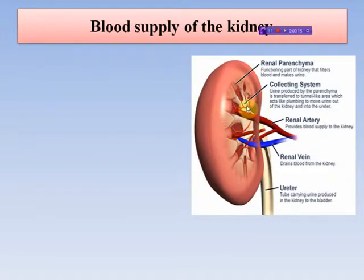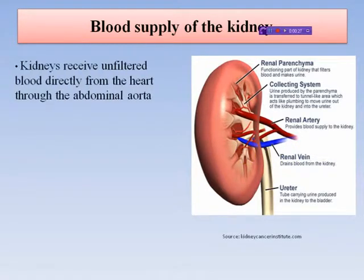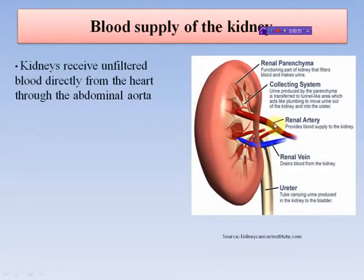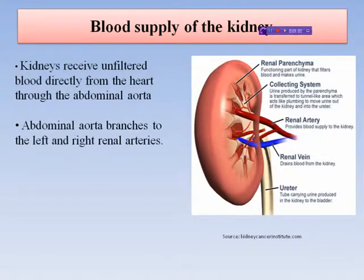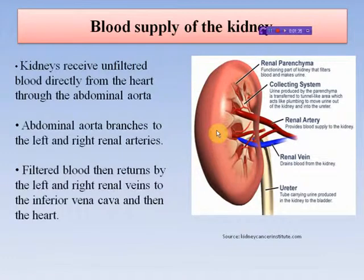Regarding blood supply of the kidney: the renal parenchyma is the functioning part, the collecting system manages urine flow, and the ureter carries urine to the bladder. Kidneys receive unfiltered blood directly from the heart through the abdominal aorta. Located in the retroperitoneum, the kidneys receive blood from the paired renal arteries and drain into paired renal veins. The abdominal aorta branches into the left and right renal arteries.